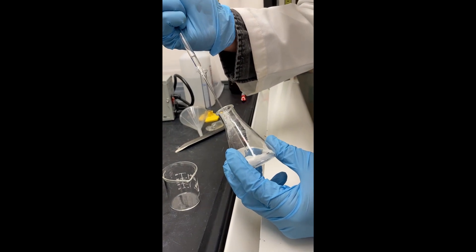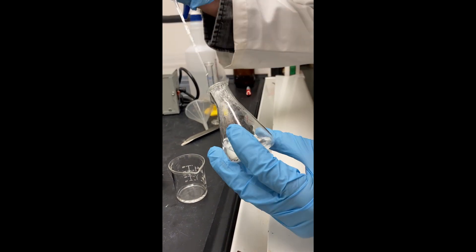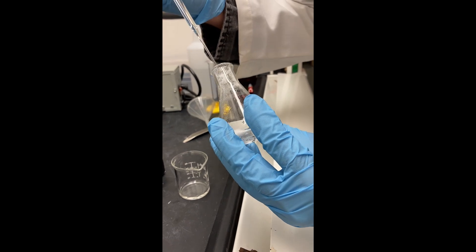Transfer the hexane layers to the beaker. Make sure you don't transfer any magnesium sulfate, since that will artificially increase the mass of our oil.